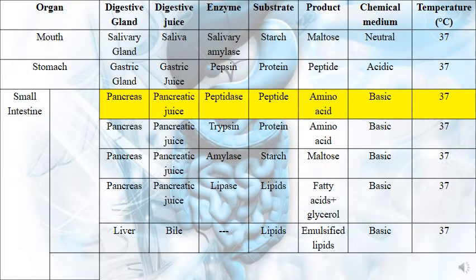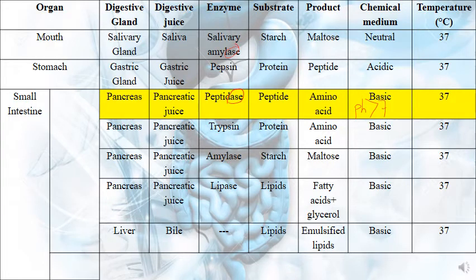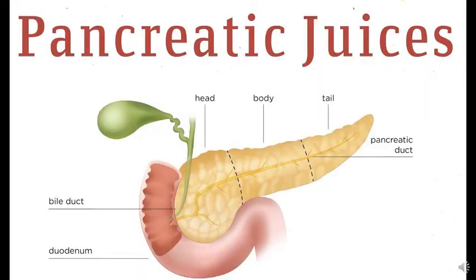Now let's move to the pancreas. The pancreatic juice contains an enzyme called peptidase. Any word ending in '-ase' is an enzyme, like amylase. Peptidase, as its name indicates, digests peptide into amino acid — the simplest form of protein. The medium is basic, meaning pH greater than 7, and the temperature is 37 degrees Celsius. Note that only the mouth is neutral and only the stomach is acidic; all the rest work in a basic medium.